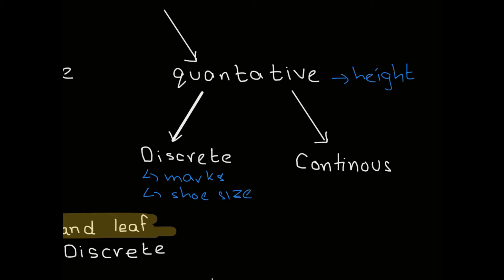If we take the example of height, we are continuously growing, so height is continuous. Similarly, the amount of time it took to complete an exam — you cannot exactly count it, and it falls within a limited range — so these are examples of continuous data.